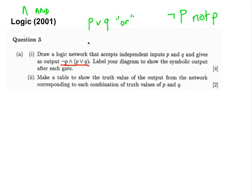Label your diagram to show the symbolic output after each gate. So that's an important step. Don't forget to actually properly label your diagram. So in the first instance what we are going to do is start off with our channel from P. So this is our input P and we are going to have it going to a NOT gate. So we are going to look at this part here first. And that's the NOT gate there.